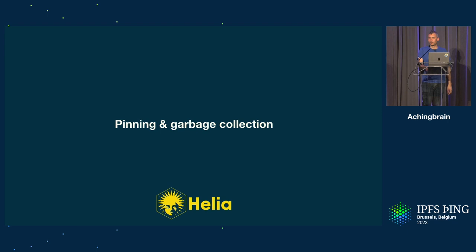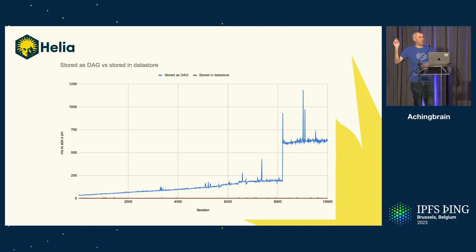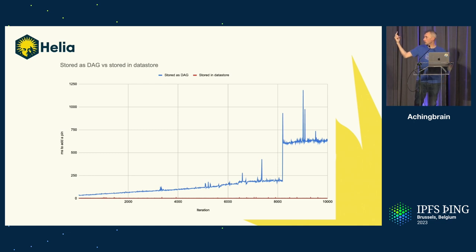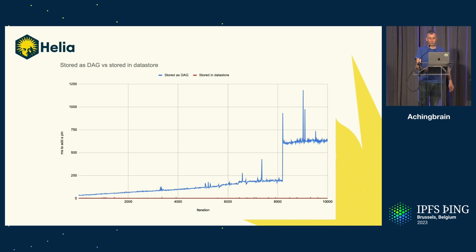Pinning garbage collection — we care about this. In the olden times in JS-IPFS, we switched from using a DAG to store the list of pins. Manipulating that DAG involved hashing things, which is CPU intensive, and CPU is awful. The new approach stores all pins in the data store, which is very fast, particularly in JS. The graph shows that as the number of pins grows, the time to add a pin went up dramatically with the old approach — that massive spike is caused by the DAG going to another level — whereas the data store performance is the red line at the bottom, massively better.